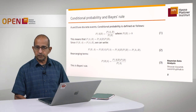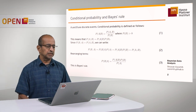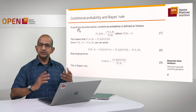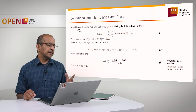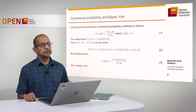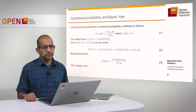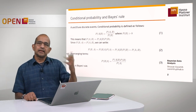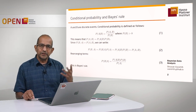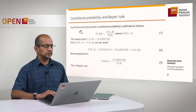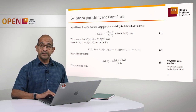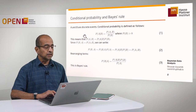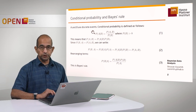Bayes' rule just follows from the conditional probability definition I showed you earlier. So suppose you have two discrete events. These could be events like A could be something like 'the streets are wet', and B could be something like 'it is raining'. So there could be some discrete events that we are talking about. Conditional probability for such discrete events is defined in probability theory in terms of this equation, which I showed you earlier as well.